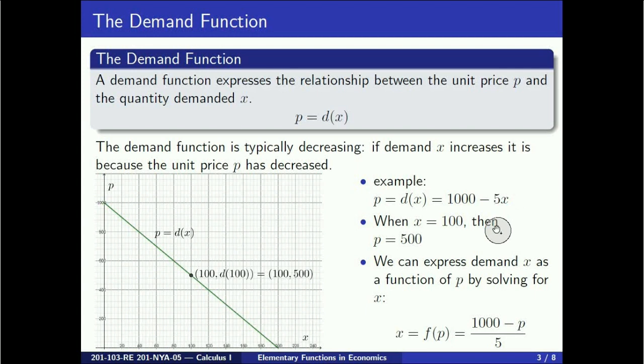We can plug in values of x to get the unit price. For instance, when the demand is 100 units, the unit price is 1000 minus 5 times 100, and that equals 500 dollars per unit.